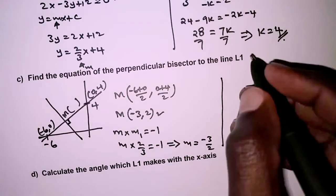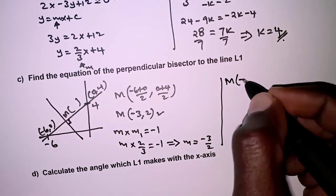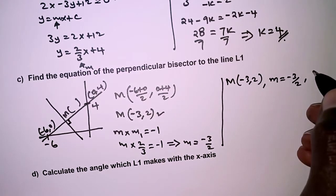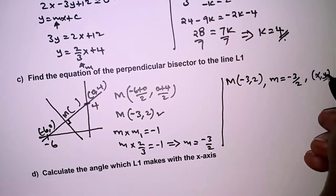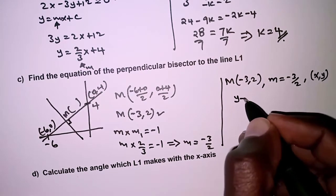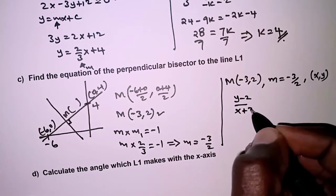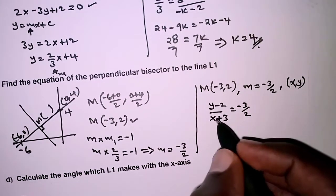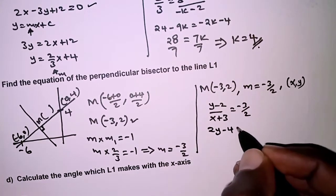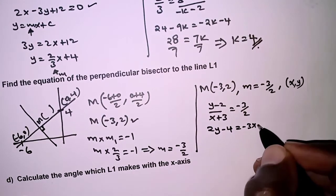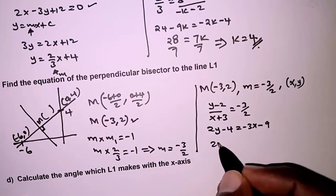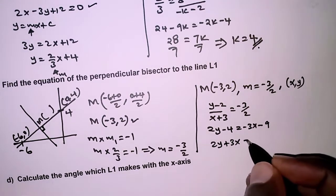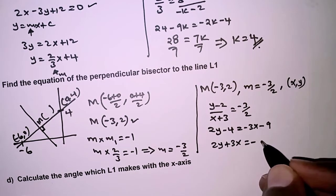With midpoint M at (negative 3, 2) and gradient negative 3/2, using an arbitrary point (x, y): (y minus 2) over (x plus 3) equals negative 3/2. Cross-multiplying gives 2y minus 4 equals negative 3x minus 9. Rearranging: 3x plus 2y equals negative 5. This is the equation of the perpendicular bisector of L1.